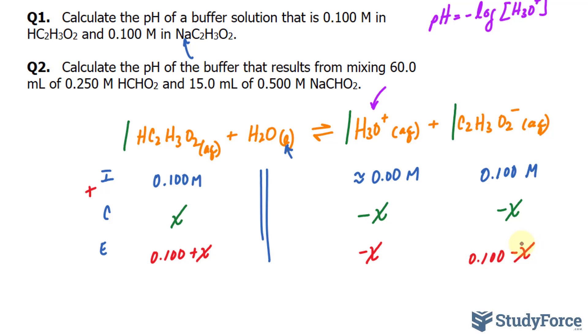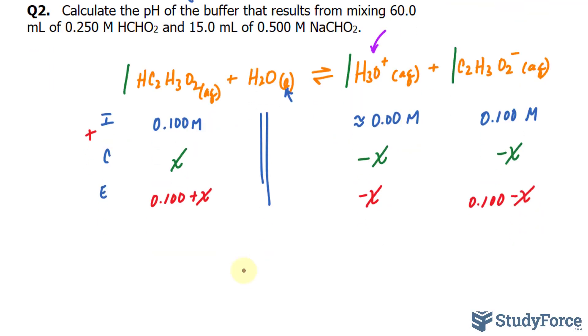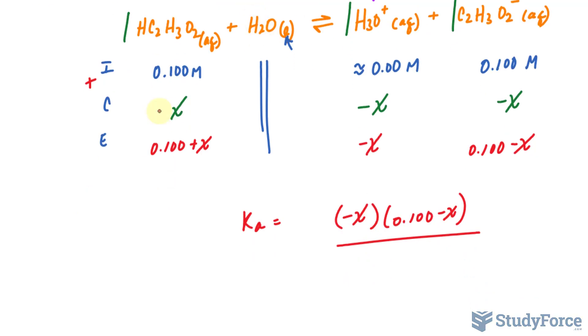Now we write down the equilibrium expression. Since this is an acid, we write down Ka is equal to the concentration of the products being multiplied. So the concentration of H3O+ in its equilibrium state is negative x, and the concentration of this molecule is, as written here, 0.100 minus x. The concentration of the reactant, the only reactant (we don't care about H2O because it's a liquid), is 0.100 plus x.